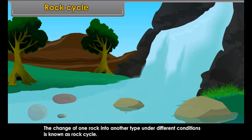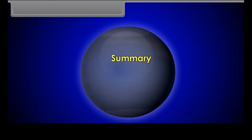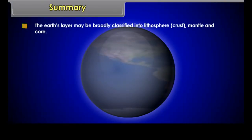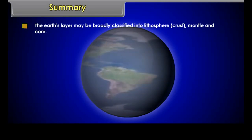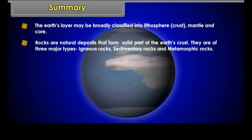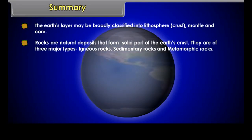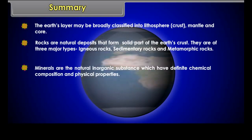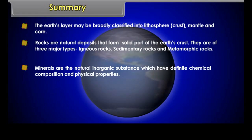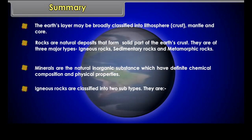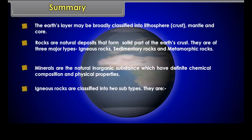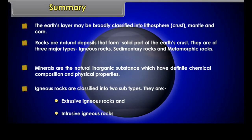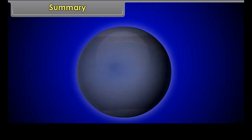Rock cycle. All rock material originating from beneath the Earth forms igneous rocks, which are the parent or primary rocks. When exposed to weather changes, they are broken and eroded, giving birth to sedimentary rocks. Due to excessive heat and pressure, these rocks further undergo change into metamorphic rocks. The change of one rock into another type under different conditions is known as the rock cycle.